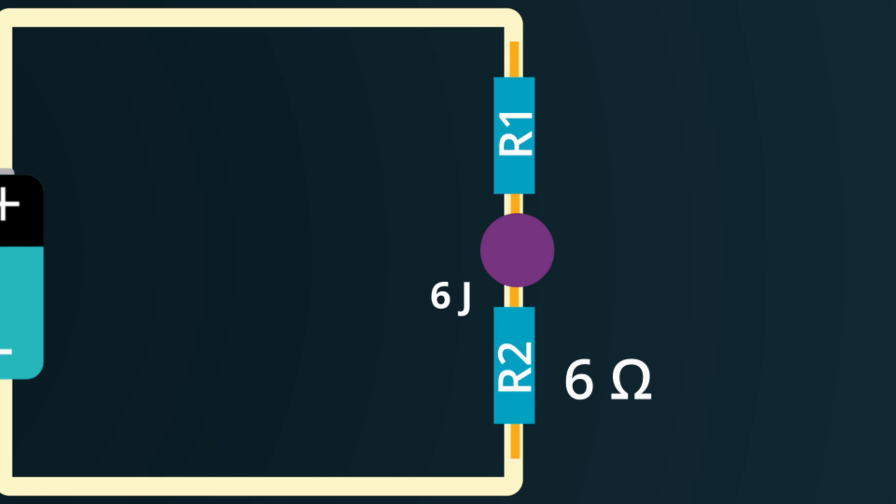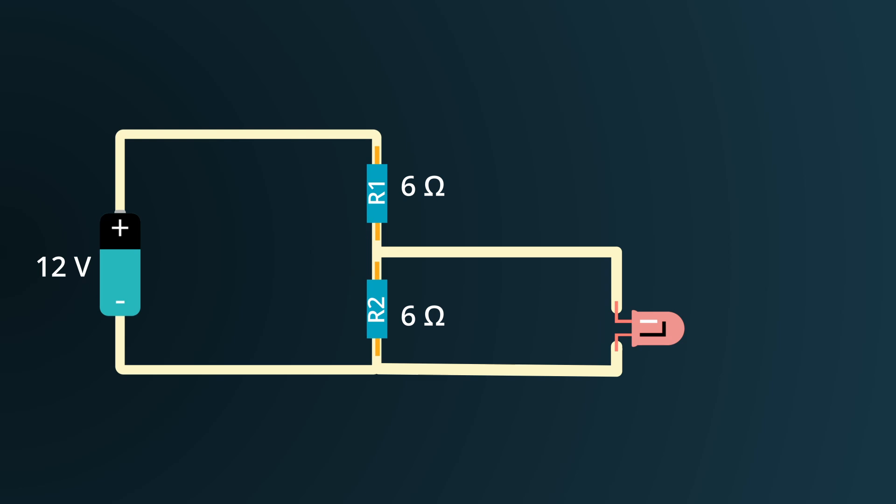Now this is where things get interesting. After the charge crosses the first resistor, it is now left with only 6 joules of energy, or a more proper way of saying this is that the voltage at this point relative to ground is now at 6 volts. We have essentially divided the battery voltage by half. If a load tapped onto this node, the voltage across that load would also be 6 volts.